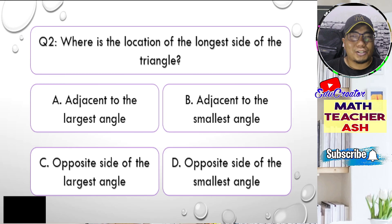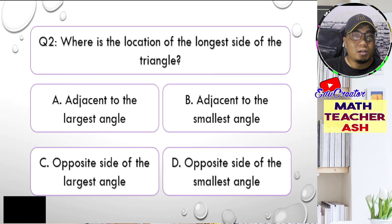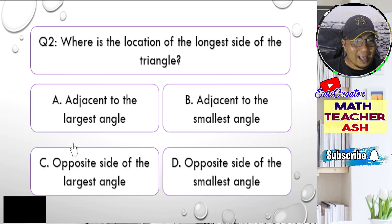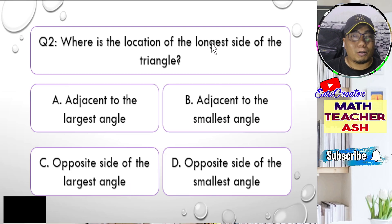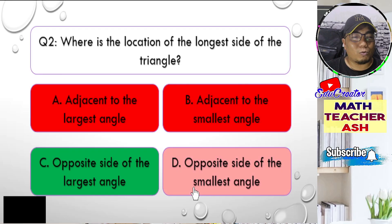Another easy question. In terms of the relationship between the angles of a triangle and its sides, always remember that the bigger the angle, the opposite side is also the longest. Therefore, the smaller the angle, we also have the shortest side opposite it. The correct answer for this question is letter C — the longest side is opposite the largest angle.